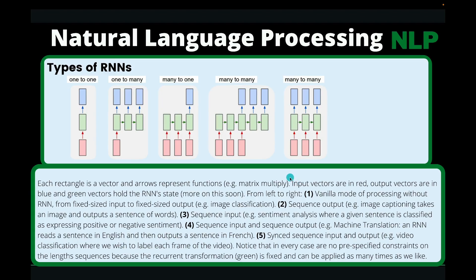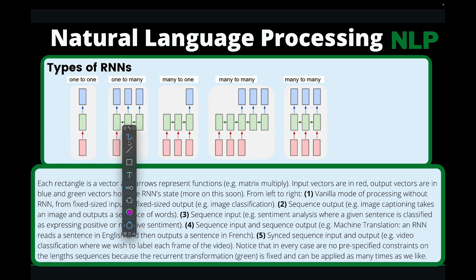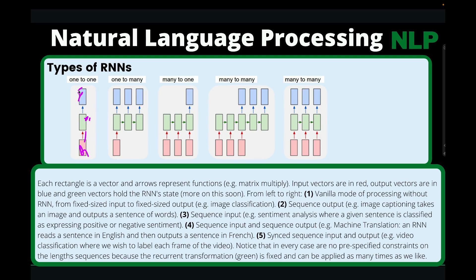There are several different types of recurrent neural networks that we will consider. We have what is called one-to-one, which is the traditional neural network that we know. You have your data points, D1, you feed it to your network, and then you get an output Y hat.